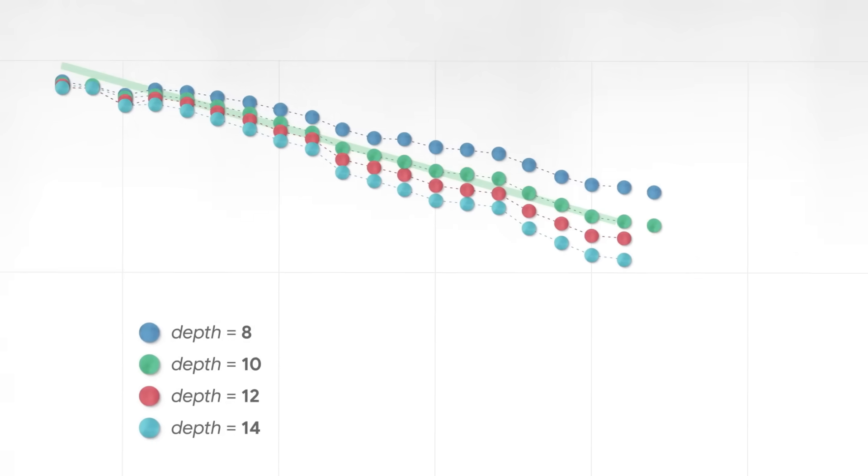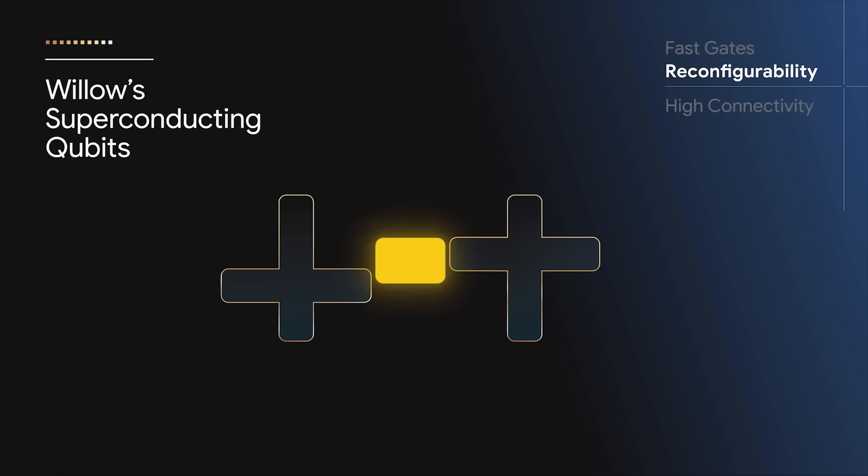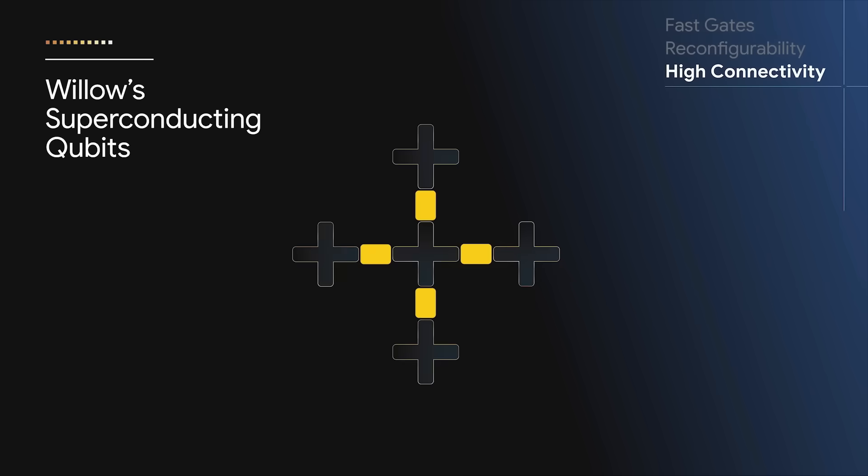Previously, the lack of error correction has been a significant obstacle to scaling quantum systems. But Google believes Willow has solved this challenge.